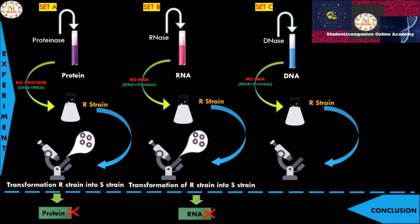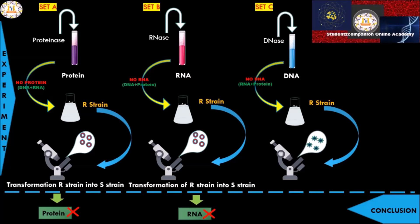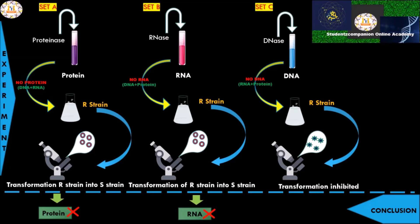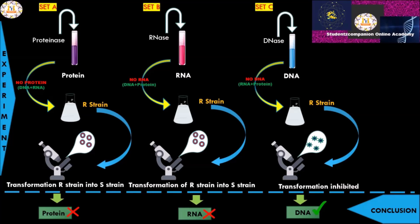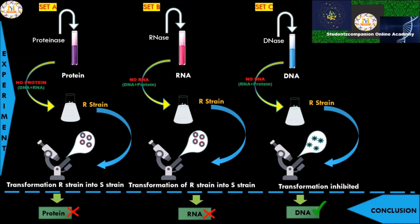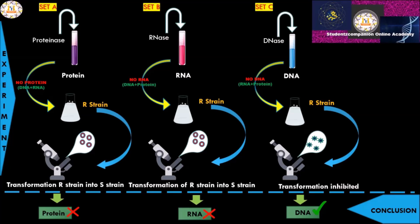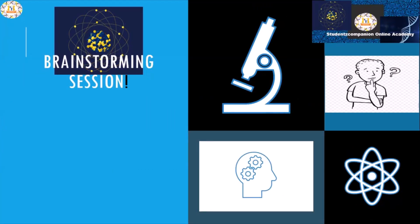In the third and last set, it was observed that R strain was not transformed — the transformation was inhibited. It can therefore be concluded that DNA can be the genetic material. After this experiment, however, there were a group of scientists who did not accept these results and still believed that protein is the genetic material. The final conclusion on the nature of genetic material is provided by the third experiment by Hershey and Chase, which we will be discussing in our next video session.